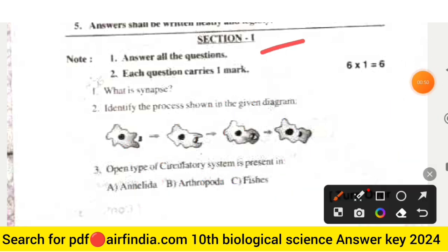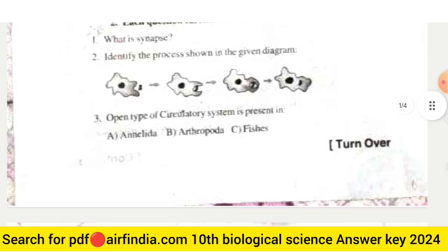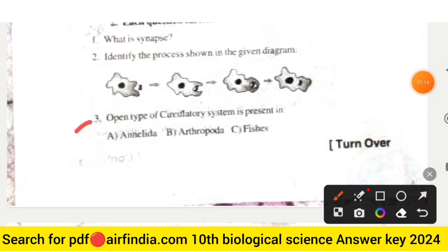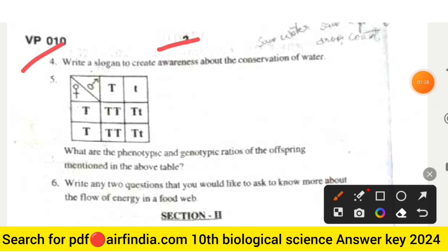Now reading the question paper: Section 1 is six marks — answer all questions, one mark each. Question 1: What is synapse? Question 2: Identify the process shown in the given diagram. Question 3: Which type of circulatory system is present in Annelida, Arthropoda, and fishes? Question 4: Write a slogan to create awareness about the conservation of water.